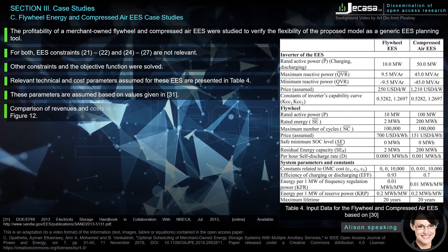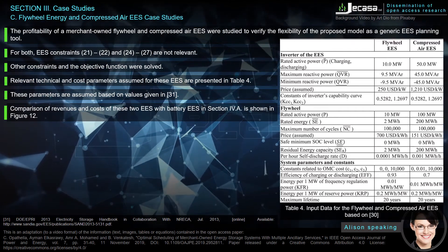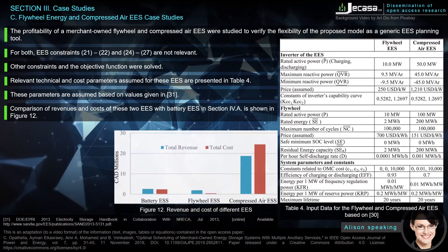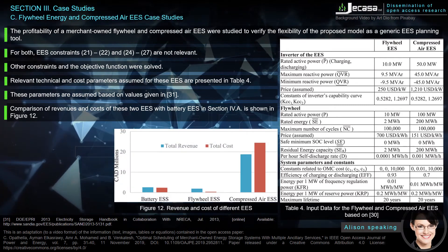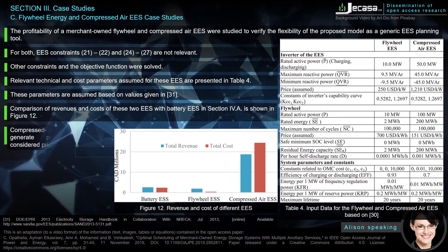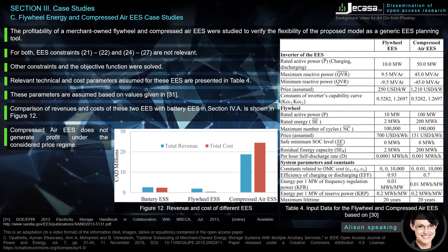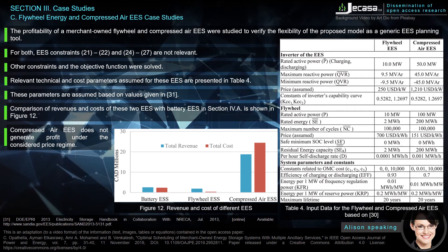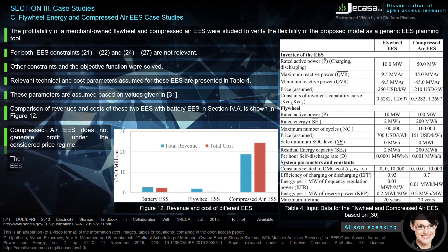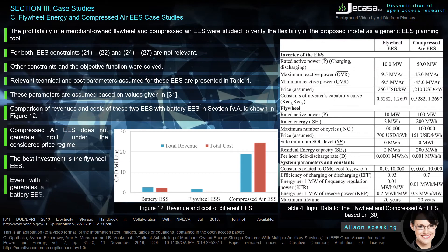A comparison of revenues and costs of the flywheel and compressed air EASE with the battery EASE from Section 4A is shown in Figure 12. Compressed air does not generate profit under the considered price regime. The best investment is the flywheel EASE — even with a low investment cost, it generates a higher profit than the battery EASE.